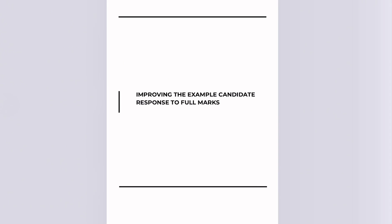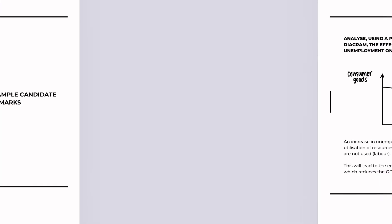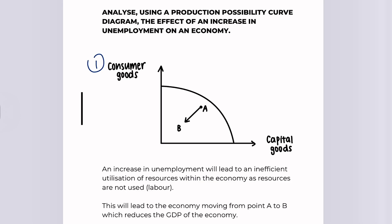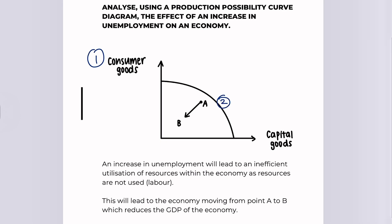So let's improve this example candidate response to six out of six. Let's see how I've done it. So for my diagram, I get one mark for the axes, I get one mark for the original curve, I get one mark from marking it from A to B, and my final mark comes from the arrow shifting from A to B.